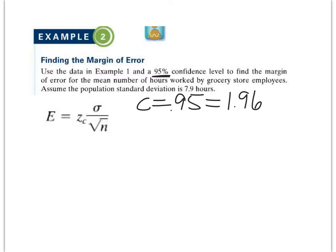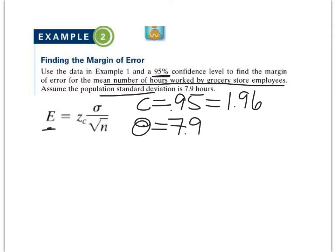We want to find the margin of error for the mean number of hours worked by grocery store employees. Assume the population standard deviation is 7.9 hours. Looking at the formula, the margin of error uses the Z-score for our confidence level — which is 1.96 — the population standard deviation of 7.9, and N, the number of data collected, which was 40.